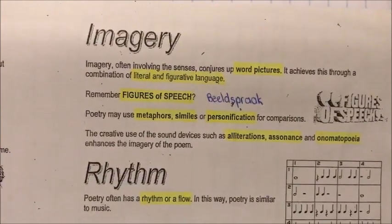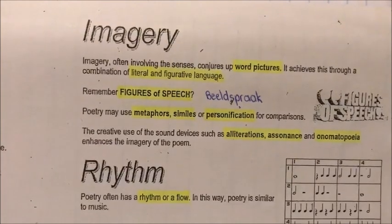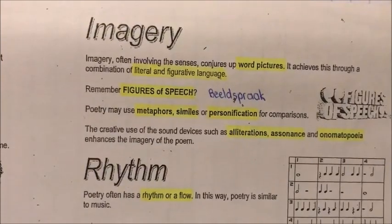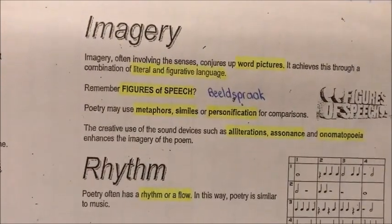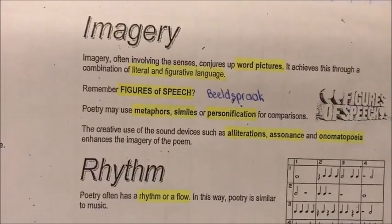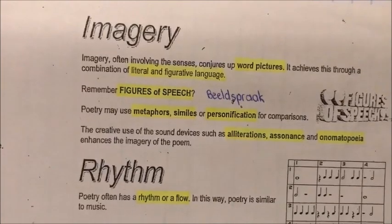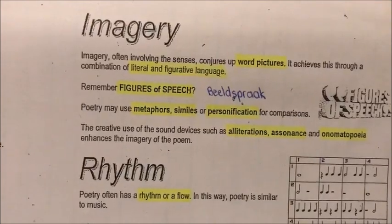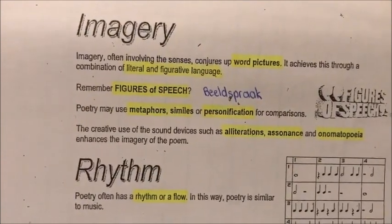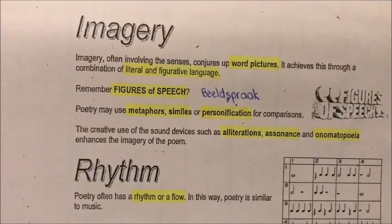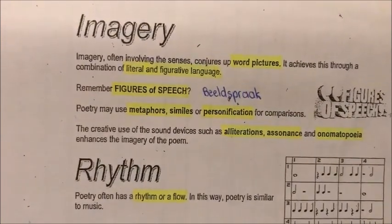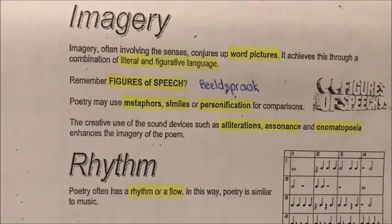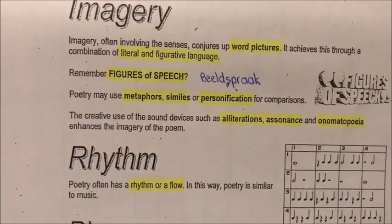Poetry may use metaphors, similes or personification for comparisons — net so as Afrikaans: metafore, vergelykings en personifikasie. Dit is alles deel van beeldspraak. Beeldspraak beteken die spesifieke woorde wat gebruik word veroorsaak dat 'n beeld, 'n prentjie in jou kop opkom. The creative use of sound devices such as alliteration, assonance and onomatopoeia enhances the imagery of the poem. Die tipe woorde wat gebruik word veroorsaak sekere klanke, en dit dra by tot hoe jy die prentjies in jou kop voer.